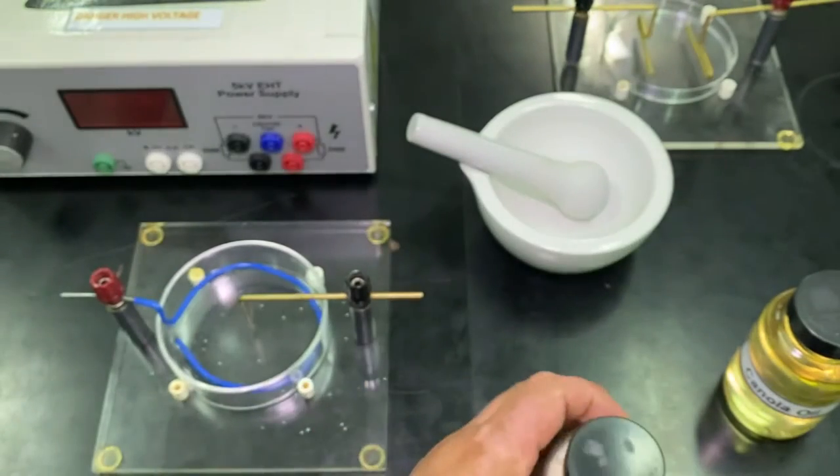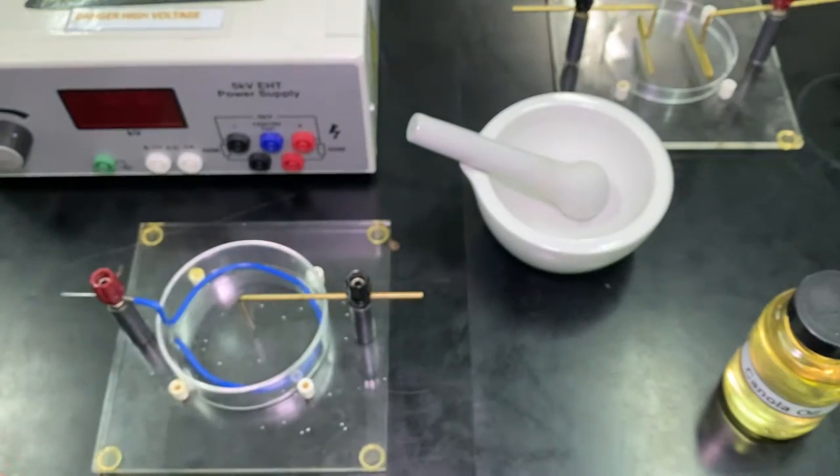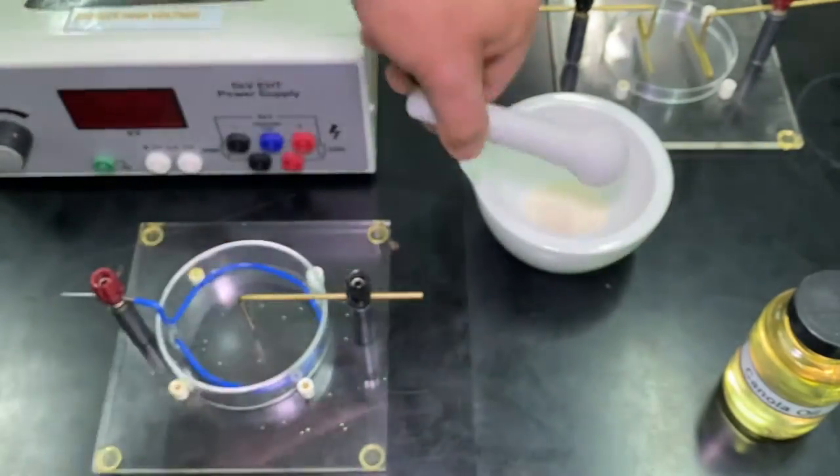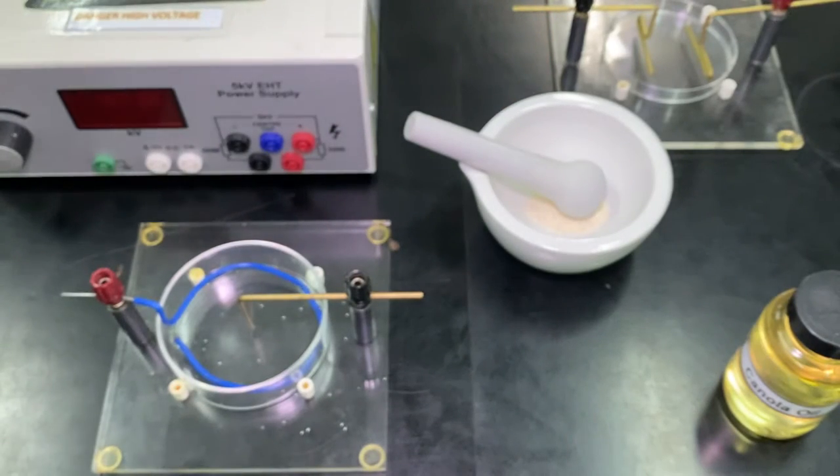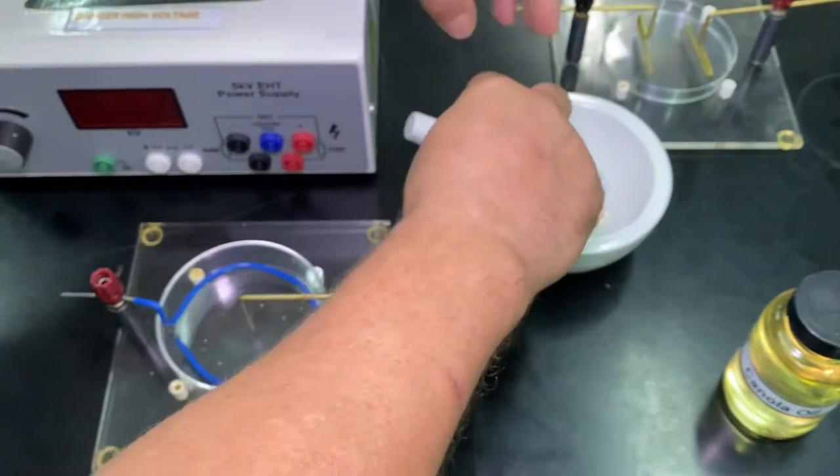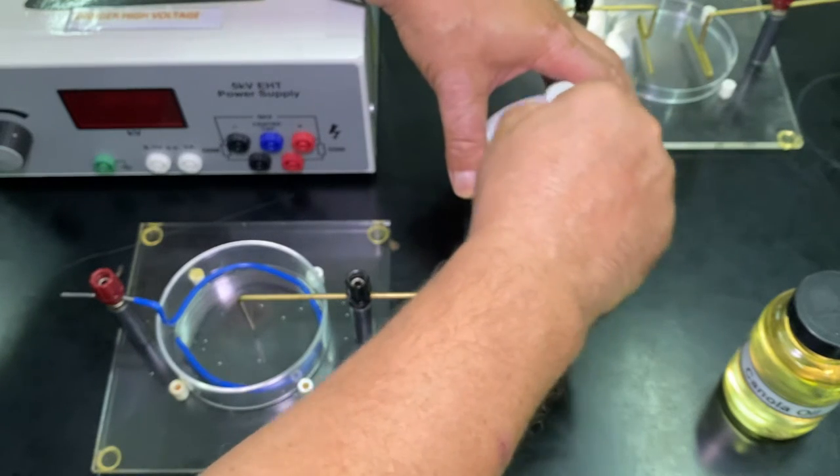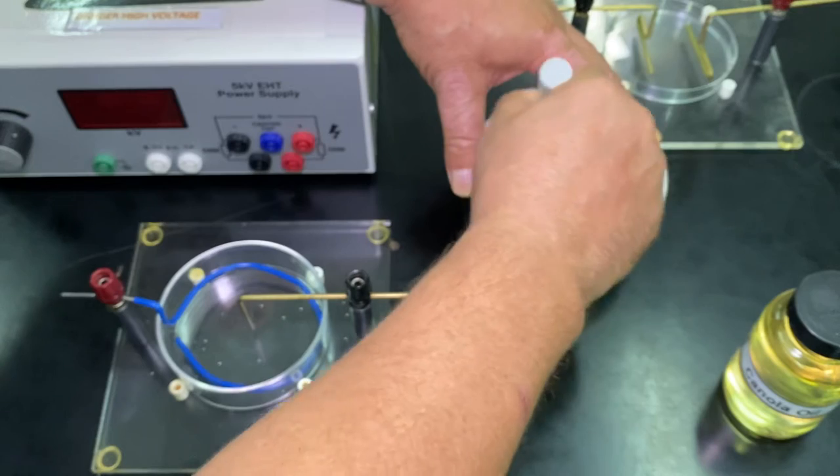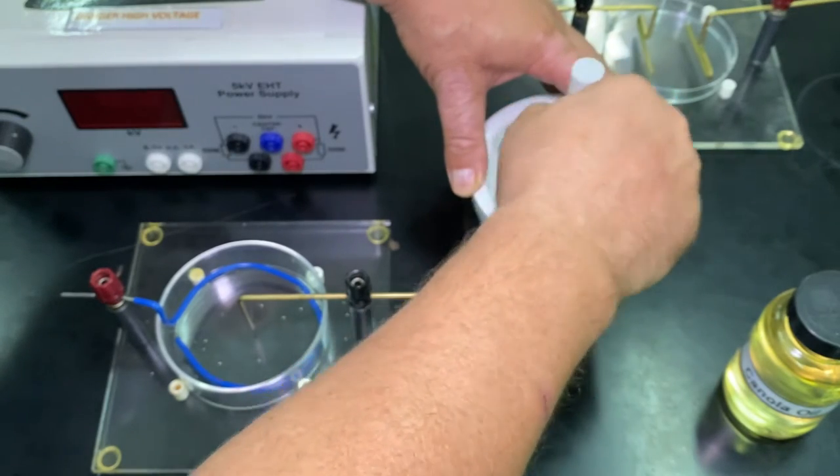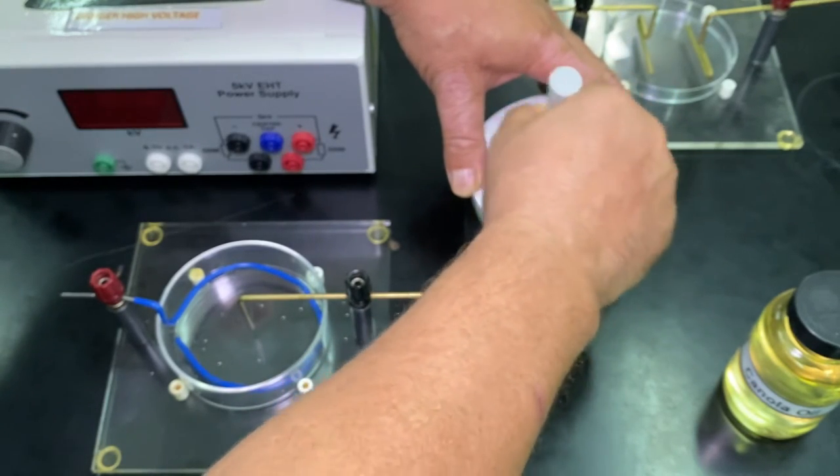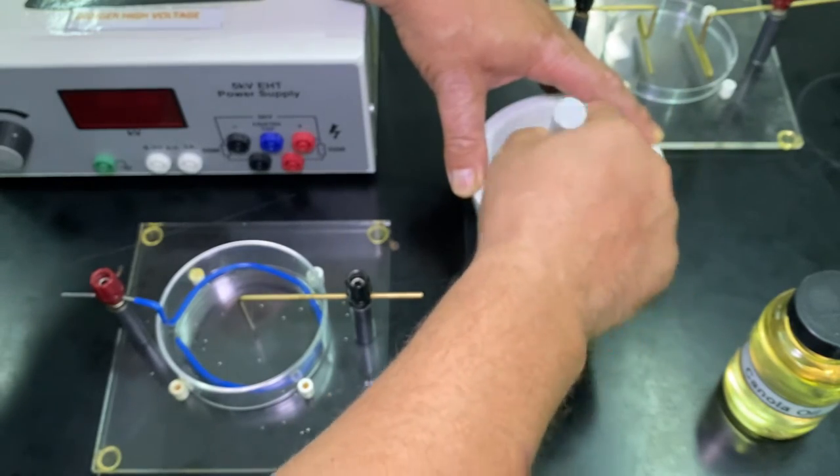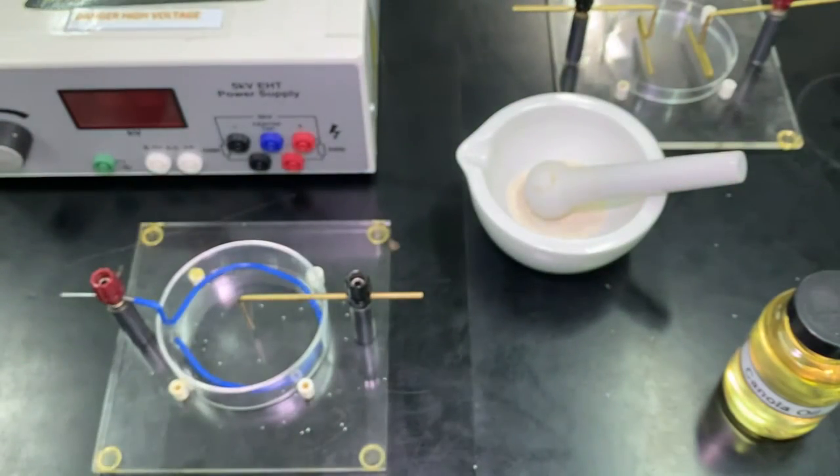Now we're going to basically charge that up by just grinding it a little bit in a mortar and pestle. Two things: this makes the particles smaller, which is nice, but also that rubbing, that friction against each other, gets them all nicely charged up.